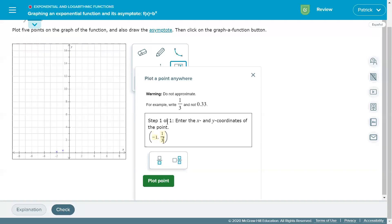I can repeat that with negative 1, 1/3rd, and with 0, 1, then 1, 3, and 2, 9. So there I have five points plotted on this curve.